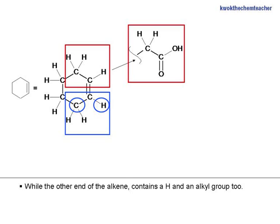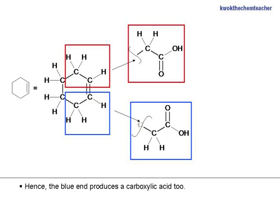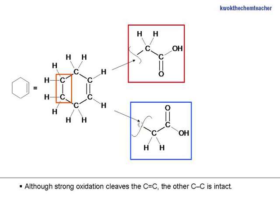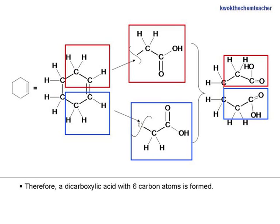The other carbon of the alkene also contains a hydrogen and an alkyl group. Hence, the blue carbon produces a carboxylic acid too. Although strong oxidation cleaves the carbon-carbon double bond, the other carbon single bonds are intact. Hence, both the red and blue carbons are actually joined together. Therefore, a dicarboxylic acid with 6 carbons is formed, as the red and blue carbons are joined together.